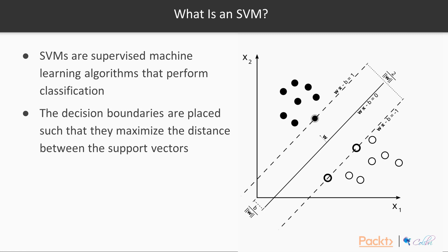An SVM is a supervised machine learning algorithm that performs classification. We need training data to train the algorithm, and then we classify the inputs based on our training.